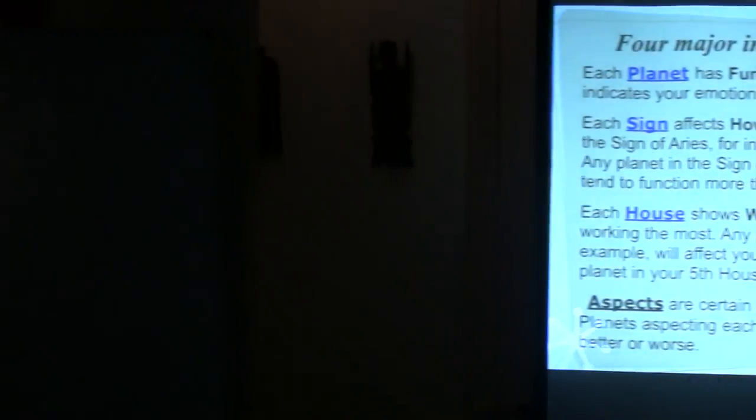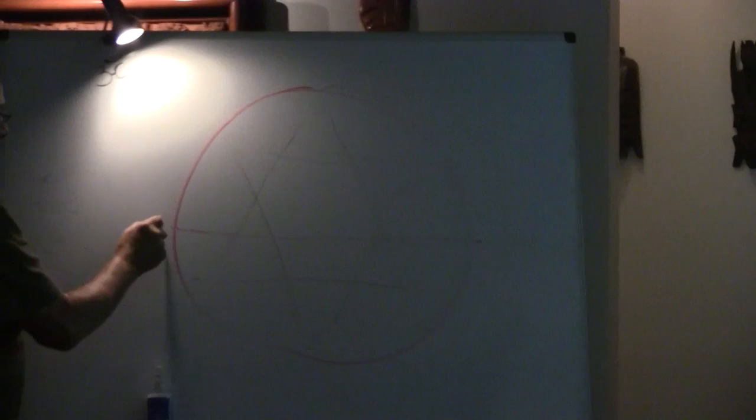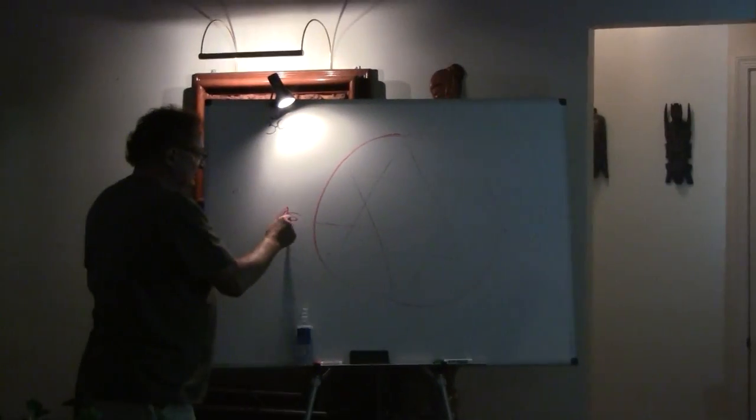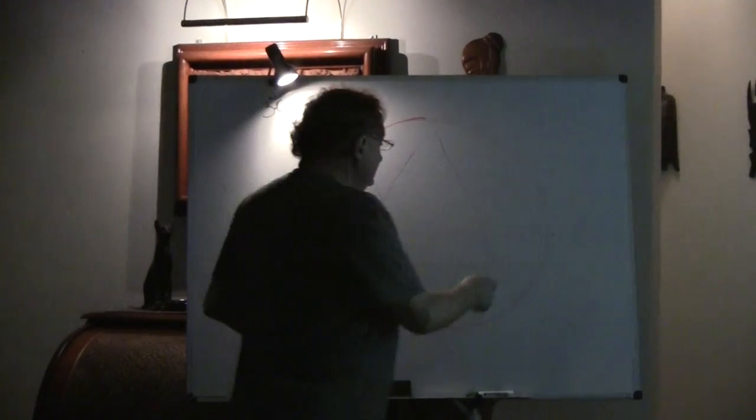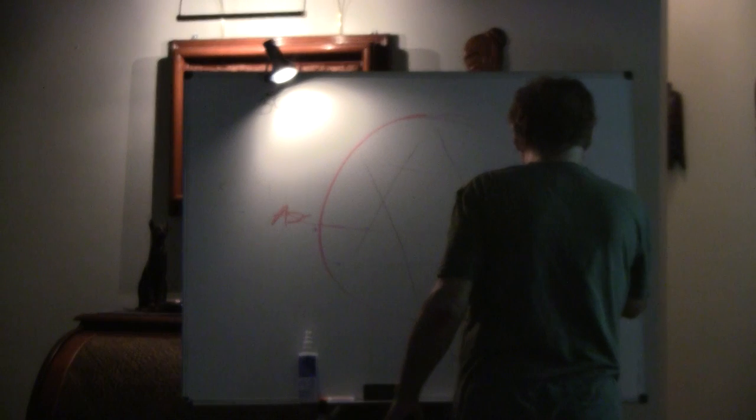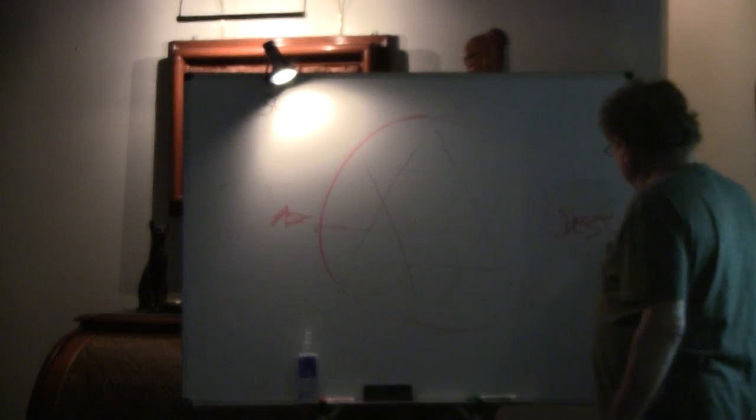If you're born at 6 a.m., right here is the first house. This is called the Ascendant, it's where the sun ascends. This is the Descendant over here, that's where the sun goes down, right here.